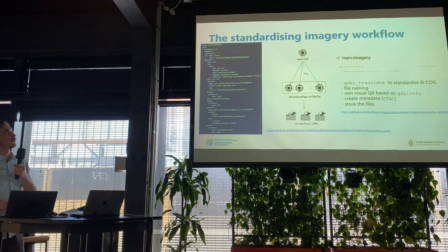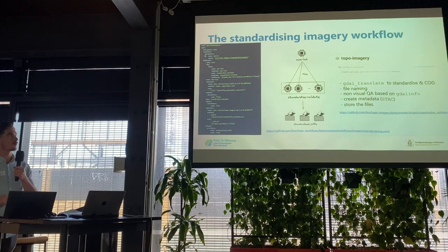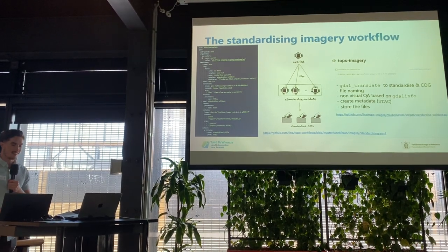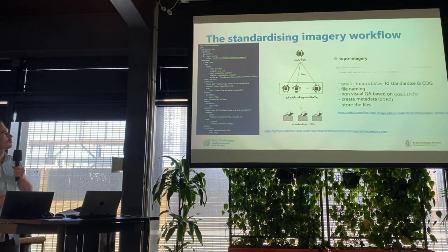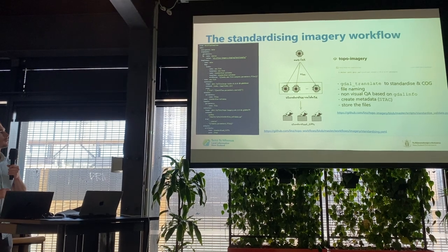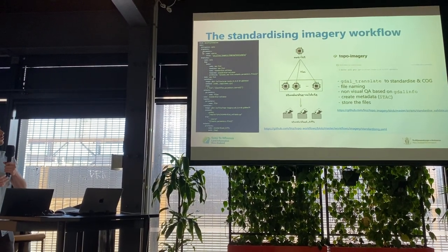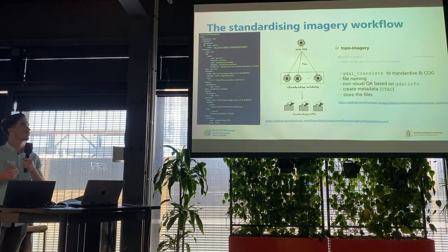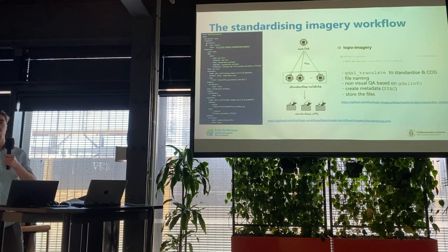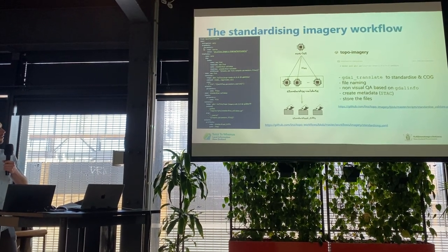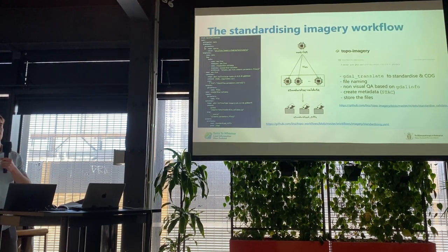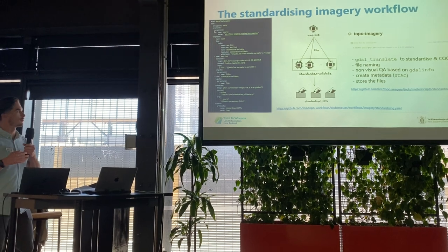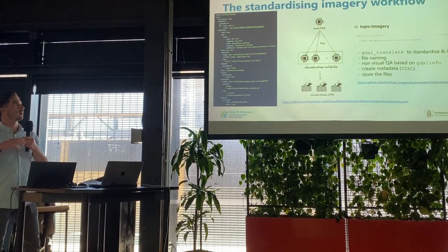This is a simplified version of our standardizing imagery workflow — I removed many tasks to make it easier to explain. On the left you can see what a workflow looks like in Argo Workflow: a description with just two tasks. One task is called AWS List — AWS for Amazon Web Services — and it lists files located on the cloud storage with filters, such as getting only TIF files with a specific name, and passes that list to the next task.